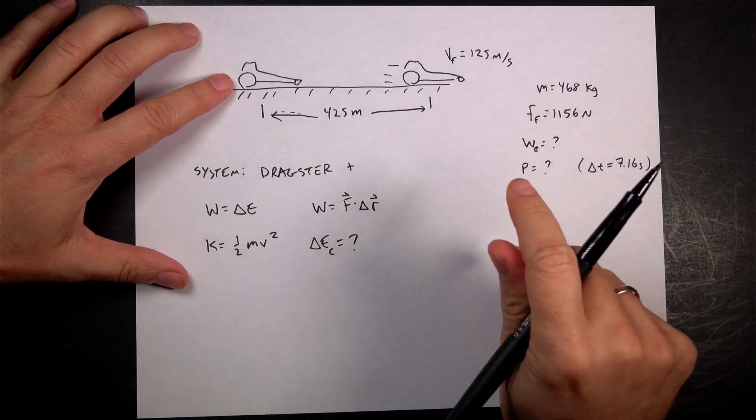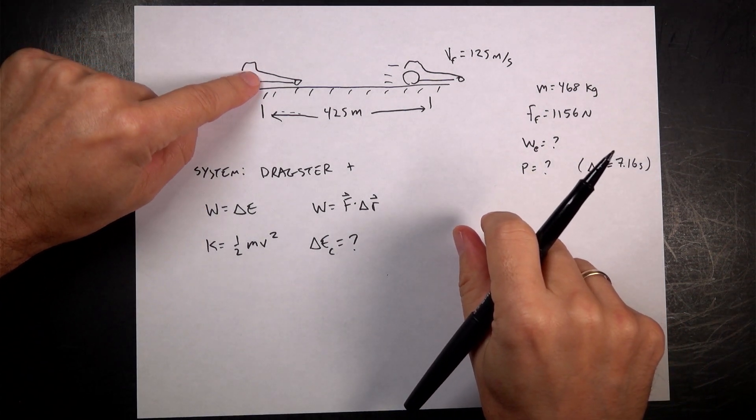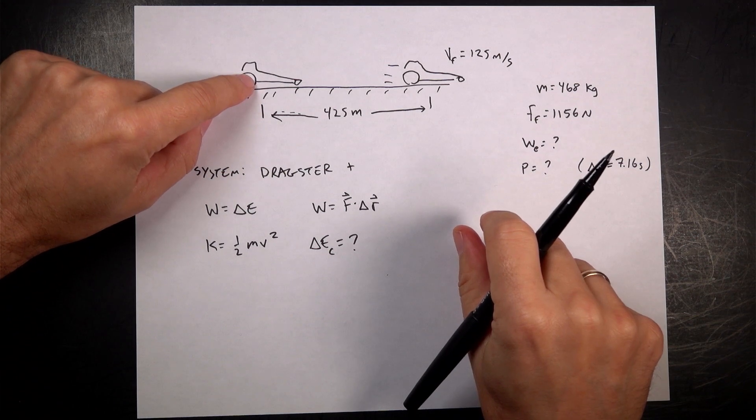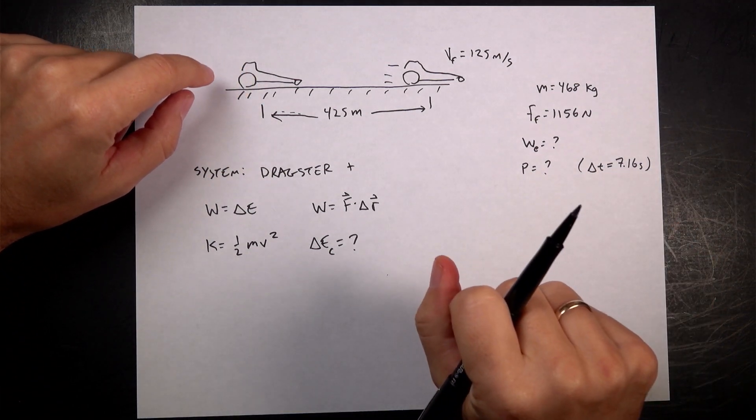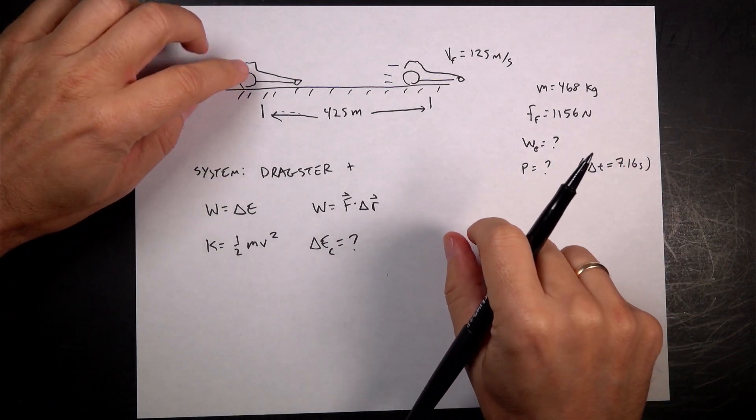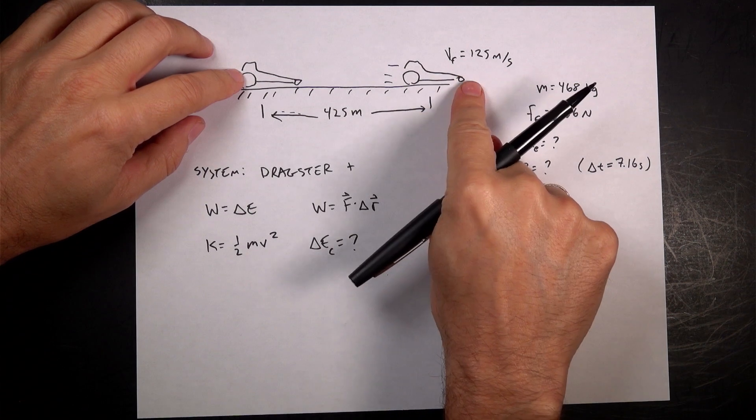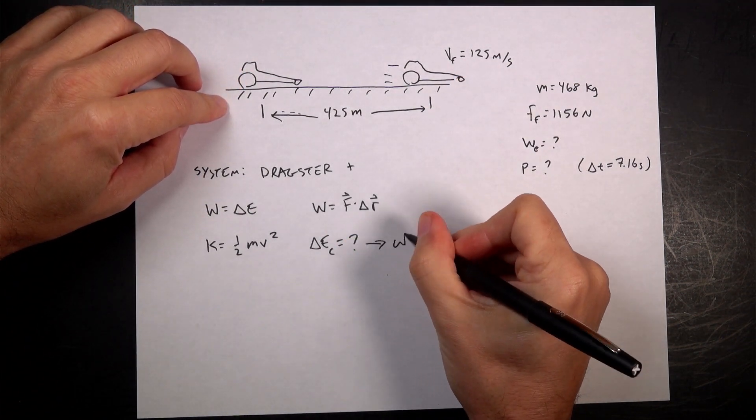We can define K as one-half mv squared. And then we have delta E chemical. I don't know that. But this engine is going to burn fuel through a chemical reaction, and you'll get a different chemical afterwards. So that change in stored chemical energy - you can call it a bunch of different things - that's what's going to make the car increase in speed. And that's technically the work done by the engine.